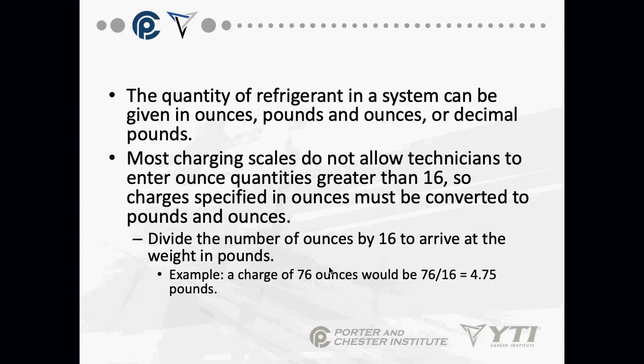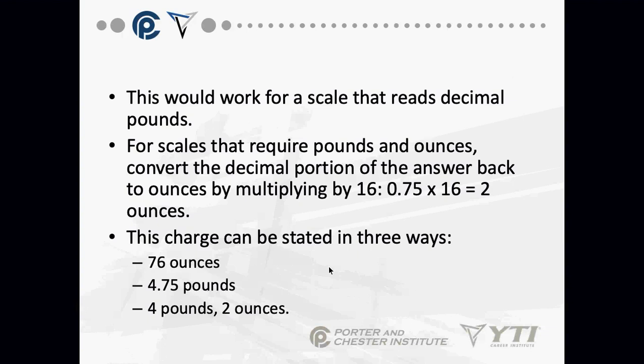Refrigerant quantity in a system can be given in pounds, ounces, or decimal pounds. Charging scales don't go to large ounce quantities, so you have to convert ounces to pounds. Divide the number of ounces by 16 to get weight in pounds. For example, 76 ounces can be stated three ways: 76 ounces, 4.75 pounds, or 4 pounds 12 ounces.